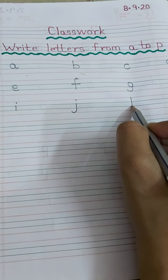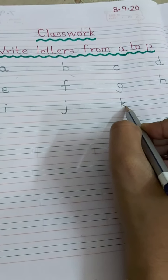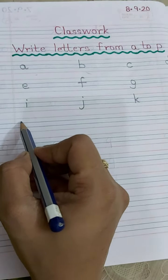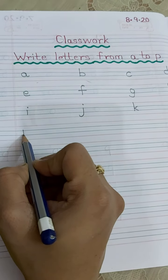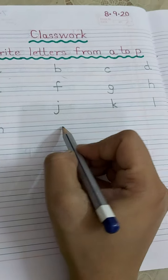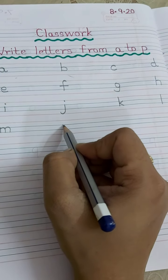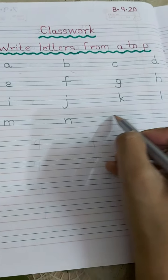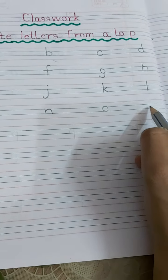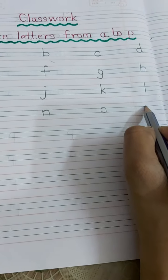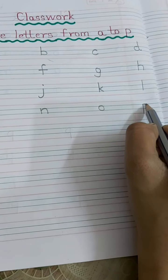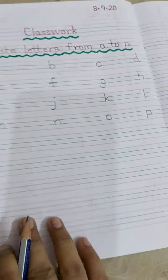Then K, L, then what comes after L? M. After M, N. Then O, then P. How P is to be written? You have to start from the black line till red line. And then you have to make a semicircle.